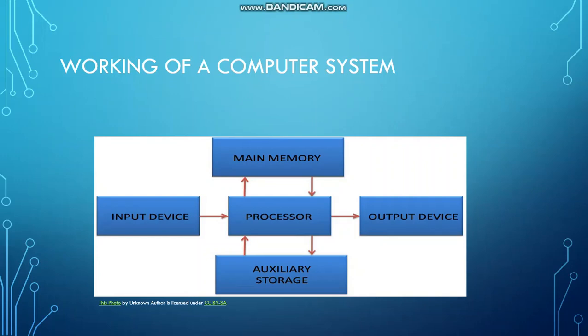What is the example of main memory? RAM and ROM come under main memory or primary memory. And the fifth one is an output device. Output device means a monitor — a monitor screen is an output device. So this is a block diagram of a computer system and the working of a computer system.